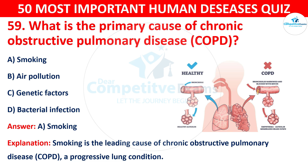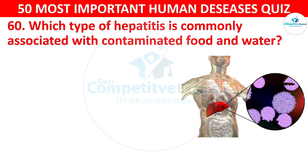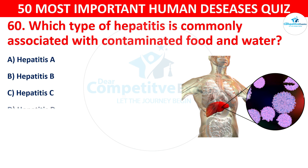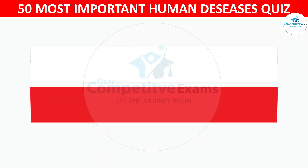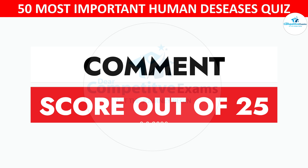Question 60: Which type of hepatitis is commonly associated with contaminated food and water? The options are: A) Hepatitis A, B) Hepatitis B, C) Hepatitis C, or D) Hepatitis D. The correct answer is Hepatitis A. Hepatitis A is primarily transmitted through the fecal-oral route, often due to contaminated food and water. Please comment your score out of 25 questions and share your learning from this video — your comments inspire and motivate us to bring good content. Thank you for watching.